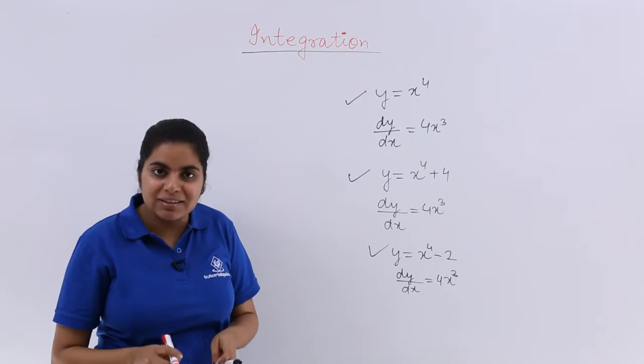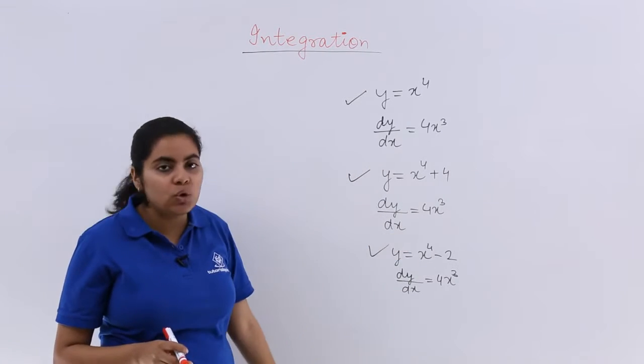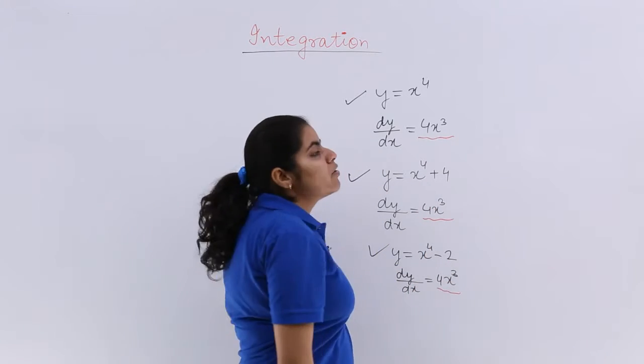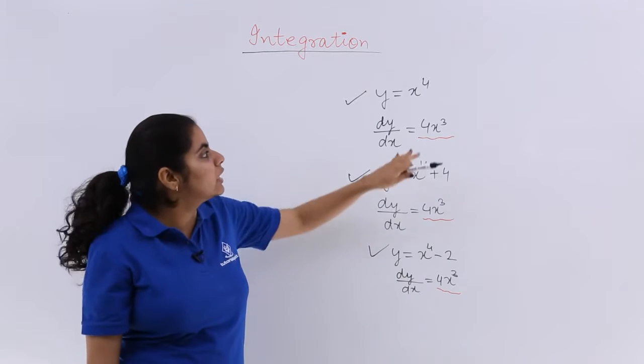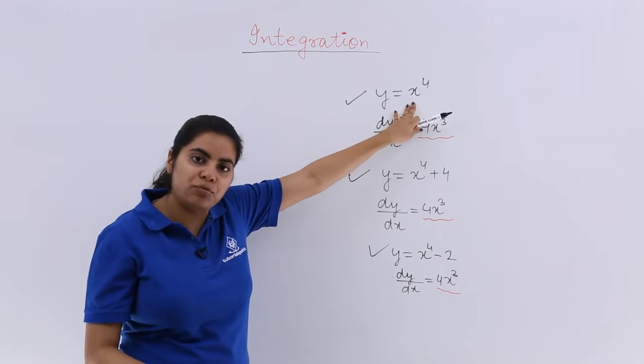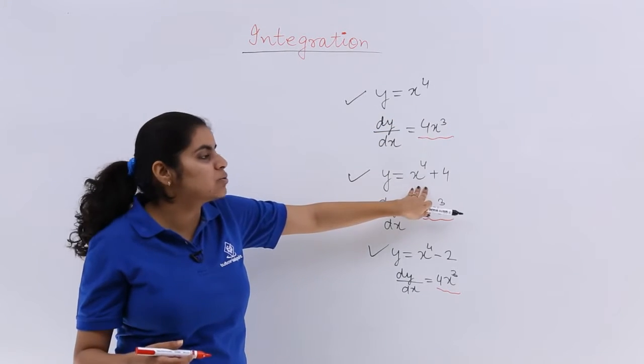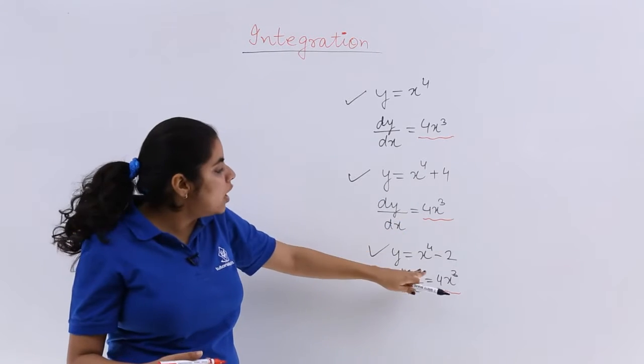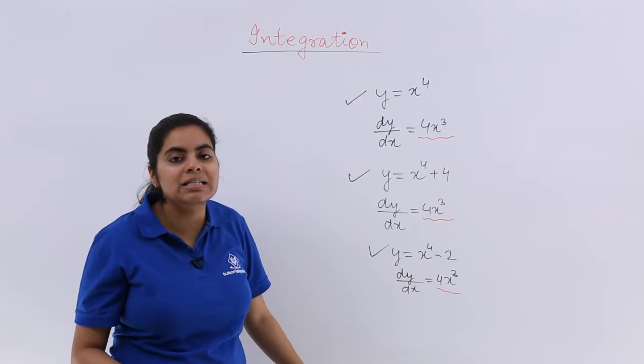That means what? That means 4x cube is there, which is the answer that comes when I differentiate the given function x raised to the power 4 or x raised to the power 4 plus something, some constant or x raised to the power 4 minus some constant.